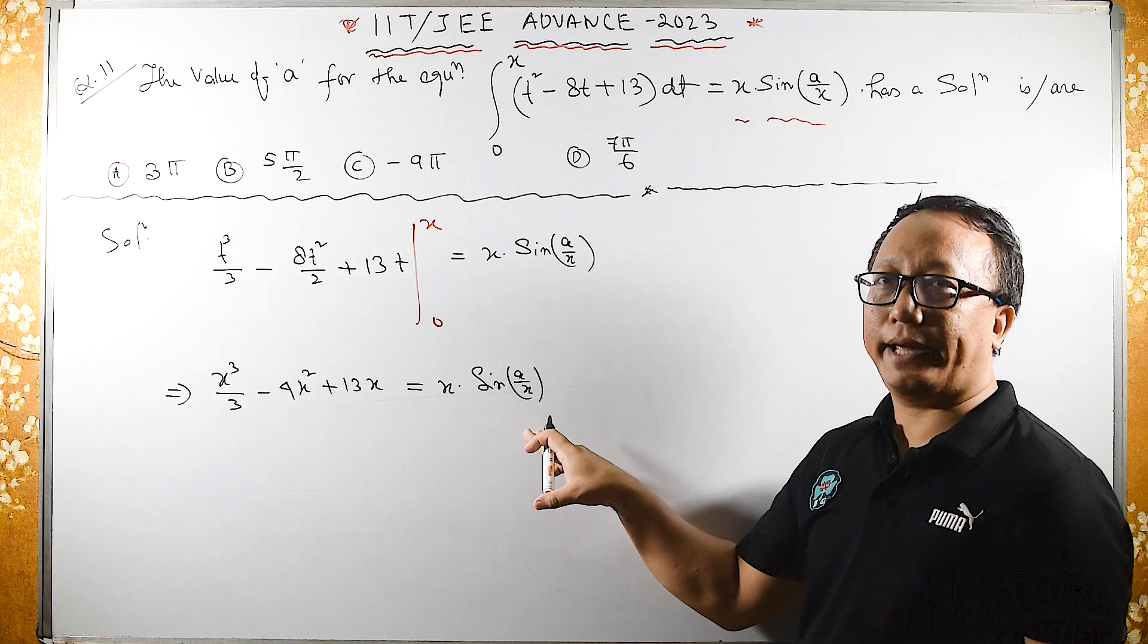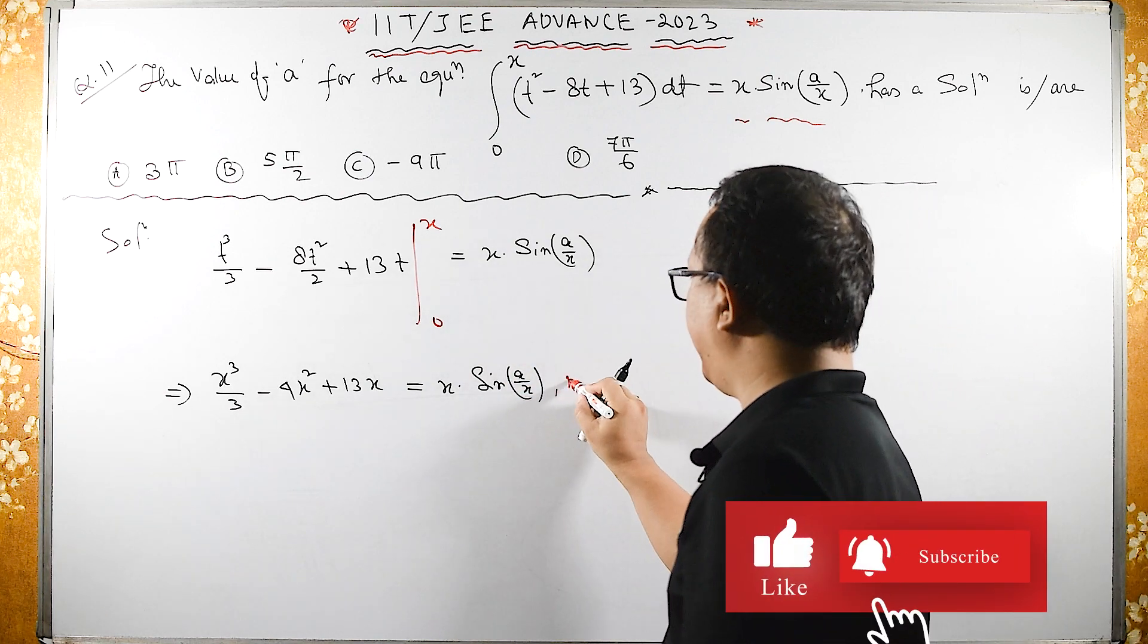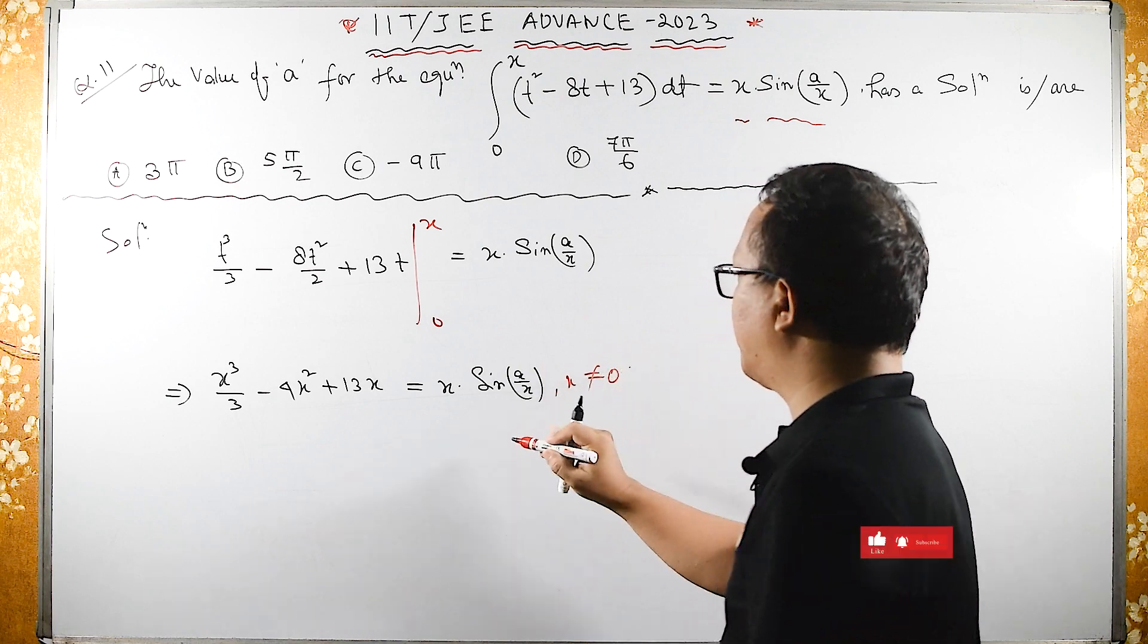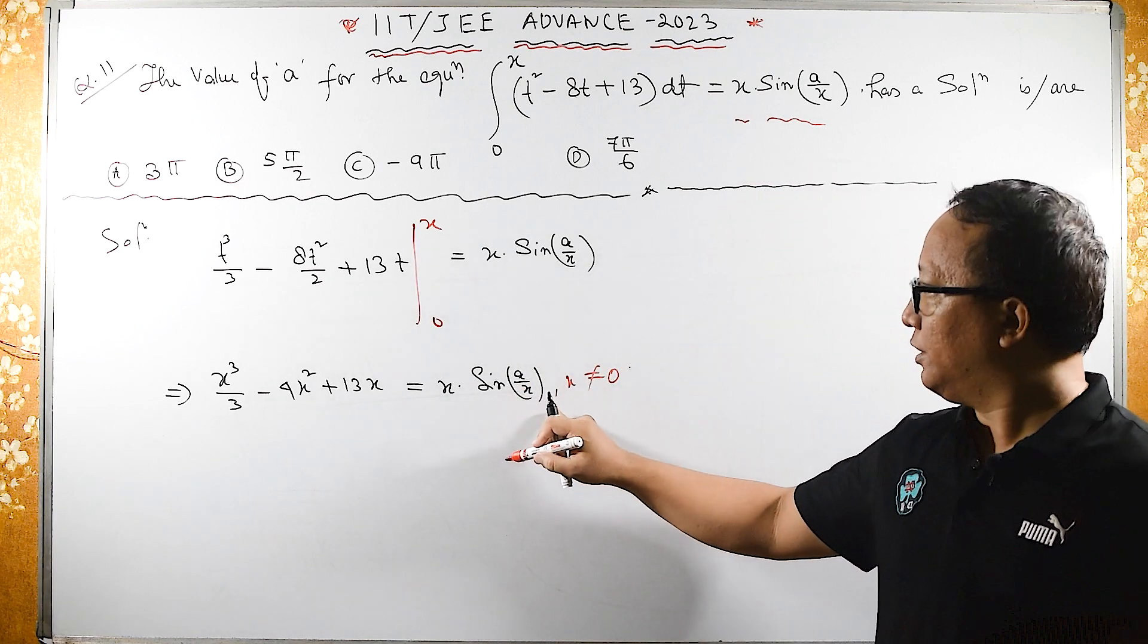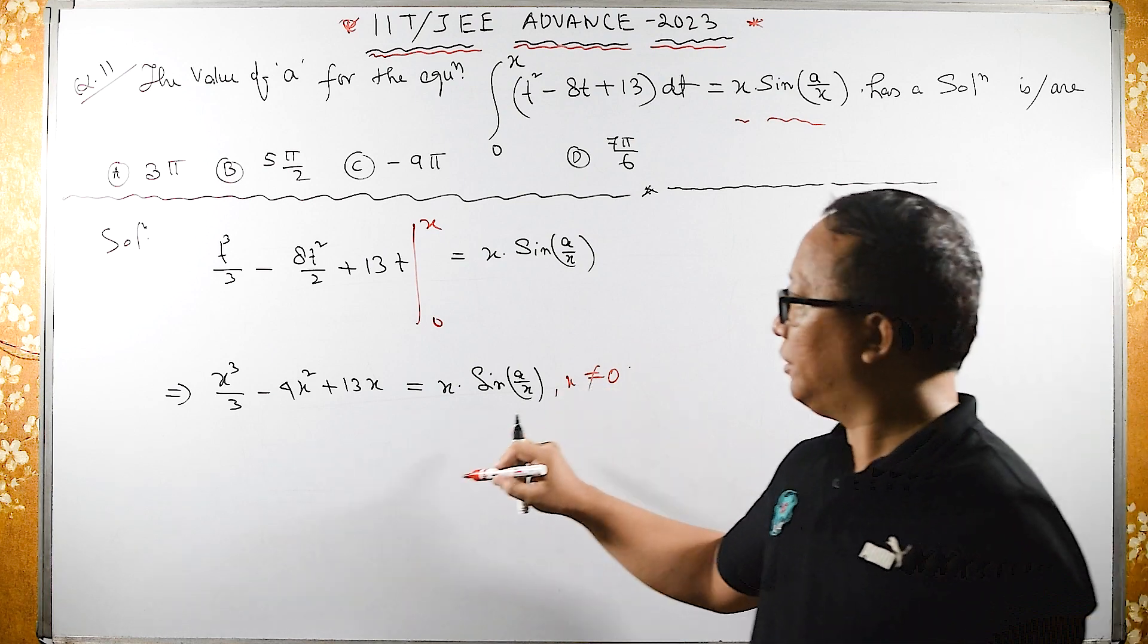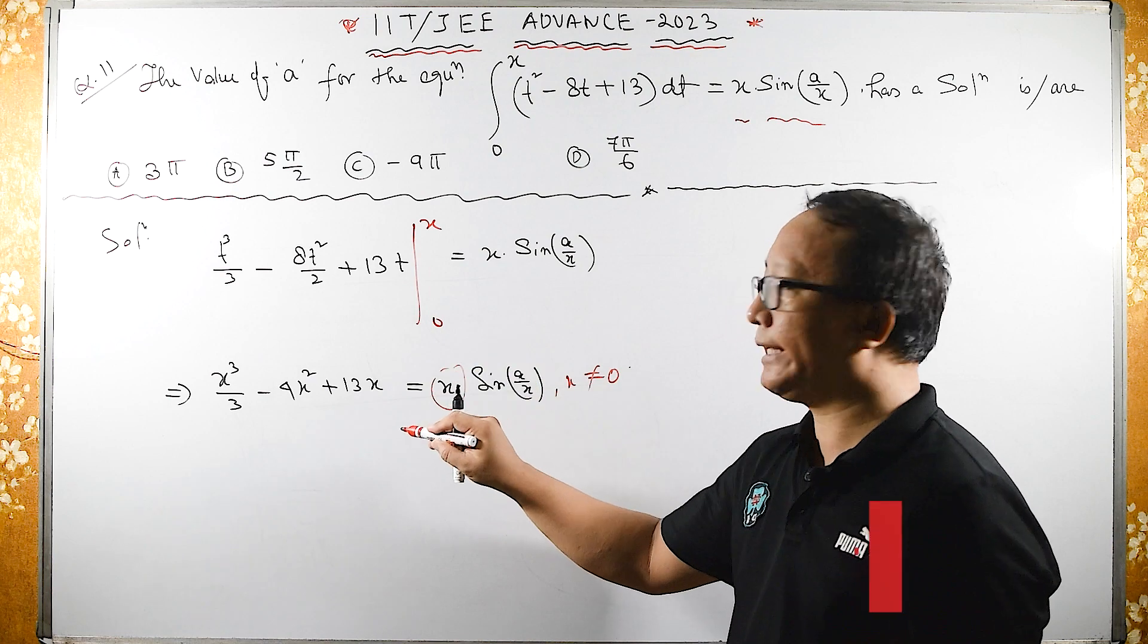Look here, we have sin(A/X). Here X should not be equal to 0. If X equals 0 then it is undefined. So since X is not equal to 0, we can take X common and then cancel X.